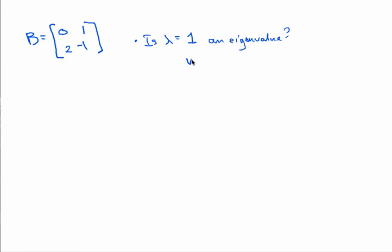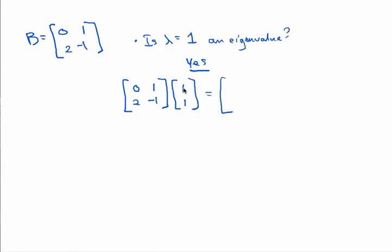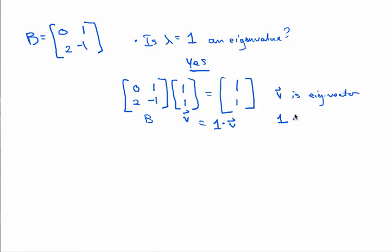The answer is absolutely yes, because here is a vector that satisfies a certain property. The vector is (1, 1). Take (1, 1) times this matrix: 0 times 1 plus 1 times 1 is 1, and 2 times 1 plus negative 1 times 1 is also 1. So here is a vector V such that B times V equals 1 times V. That tells us V is an eigenvector for this matrix, and 1 is an eigenvalue for that matrix.